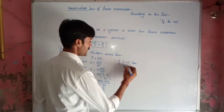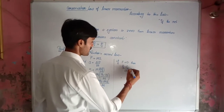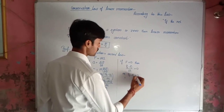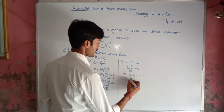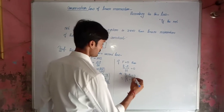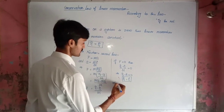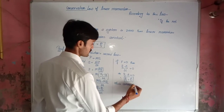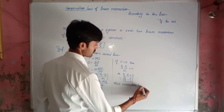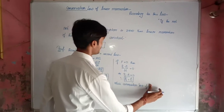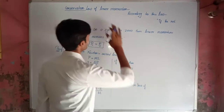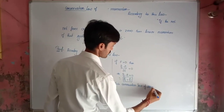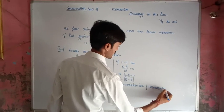If F equals zero, then P_F minus P_I divided by delta T equals zero, which implies P_F minus P_I equals zero, therefore P_F equals P_I. This is the conservation law of momentum.